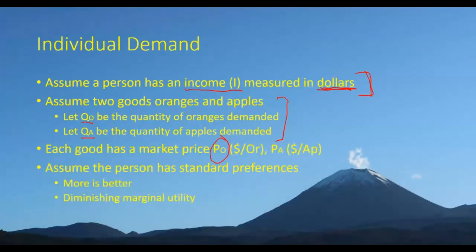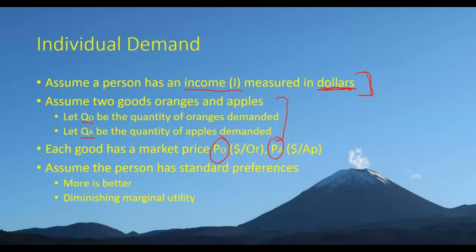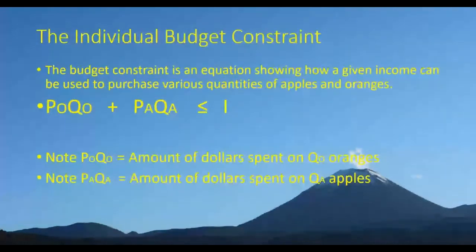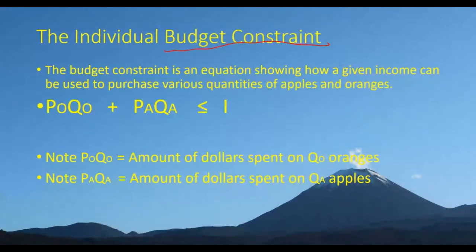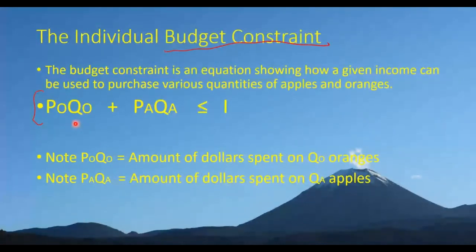We're going to assume the person has standard preferences — more is better and diminishing marginal utility. Next, we write down the budget constraint, an equation showing how a given income can be used to purchase various quantities of apples and oranges. The budget constraint is: take the price of oranges PO and multiply it by the quantity of oranges demanded QO. PO times QO equals the amount of dollars spent on oranges. For example, if PO is $2 per orange and you consume 10 oranges, that's $20.